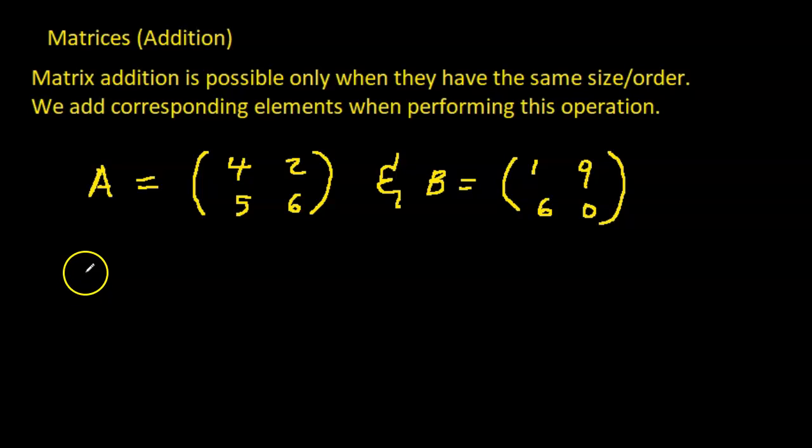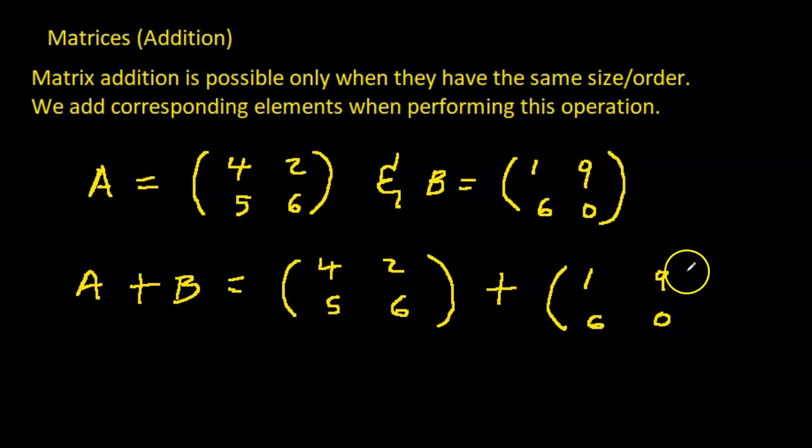And we also find A plus B. So A plus B is matrix A: 4, 2, 5, 6, plus B. And B is what? 1, 9, 6, 0.